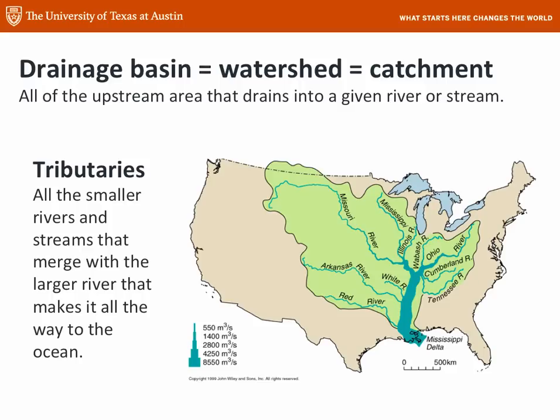You may have seen signs in your community that say something like, 'Entering Bull Creek Watershed.' This is your community reminding you that not only will all the rain that falls there end up in the river, so will all the pollutants that fall there.